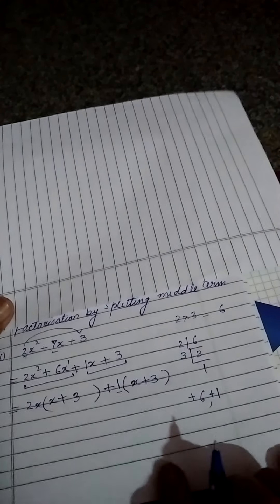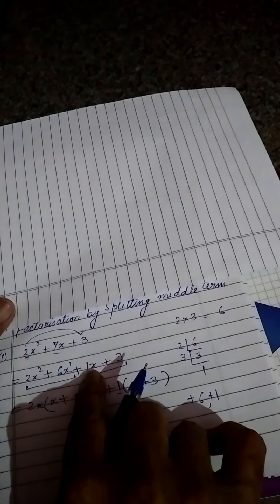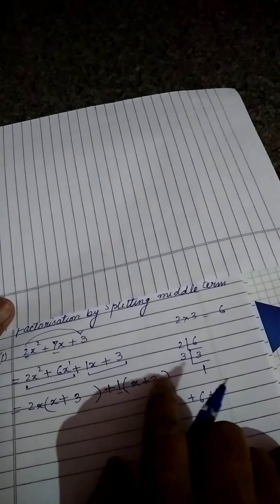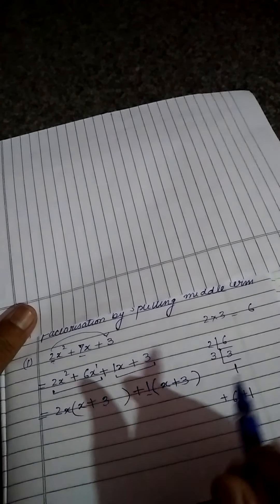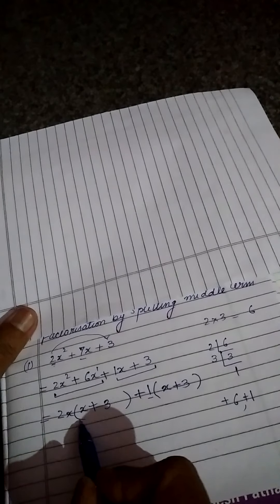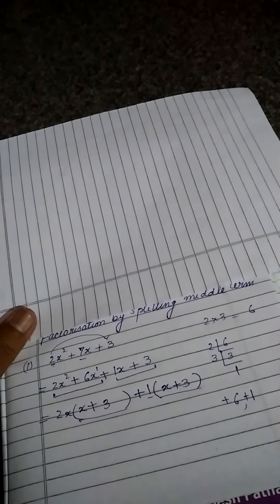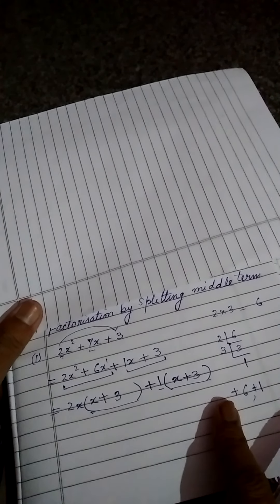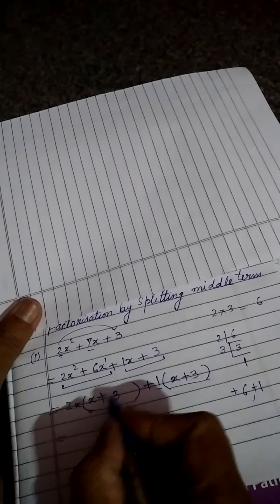Because we have taken 1 common. You want to check, you can check it again. 1 into x will be 1 into x, 1x or just x. And 1 into 3 will be 3. Whether we have done correctly or not, it depends on it. If in both the brackets, same to same is coming, means we have done correctly. If same to same is not coming, then means we have done some mistake. So it is common in both. So it will be written only once.